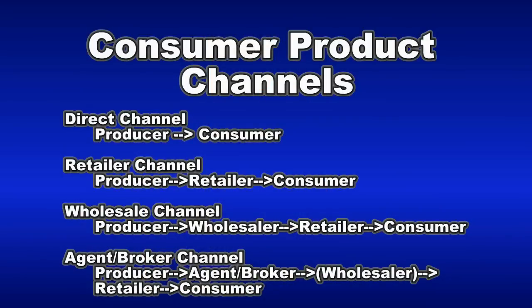When considering consumer product channels, you have choices: go direct to the consumer, through a retailer, through a wholesaler then retailer, or use your own sales force or agent broker. Sometimes you make the channel decisions; sometimes they're imposed on you. For example, beer companies cannot vertically integrate and sell directly to stores — they must go through an independent wholesaler, who then delivers to the retail store.